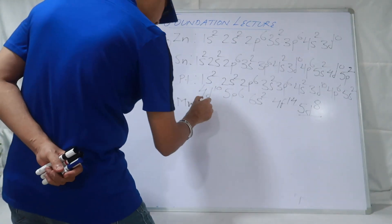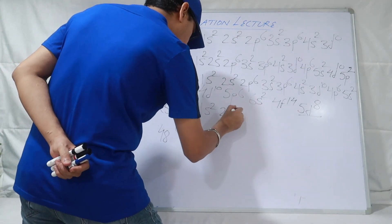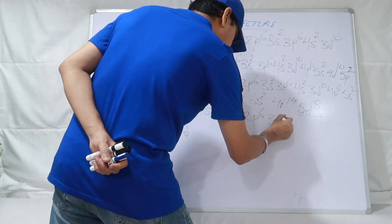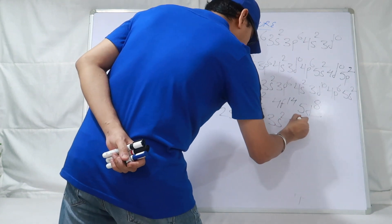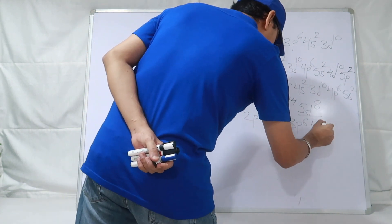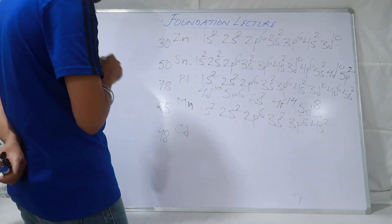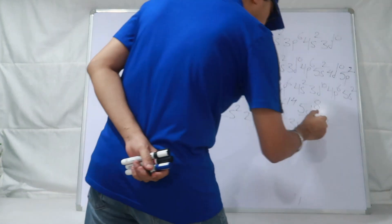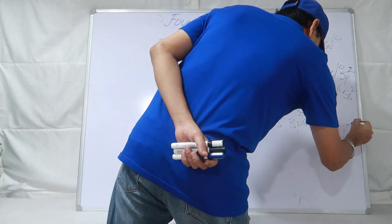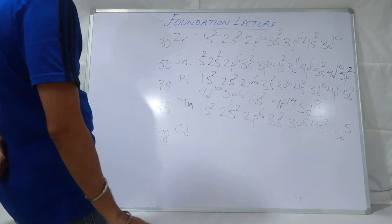Ab Manganese pe aate hain — 1s2, 2s2, 2p6, 3s2, 3p6, 4s2 — 20 ho gaya. Apne ko 5 aur chahiye. 3d10 nahi, 3d5 — because electrons khatam ho gaye. Toh wo formula mein pehle poora likha hua hai, aapko electron 10 se kam bhar sakte ho D mein — of course bhar sakte ho.